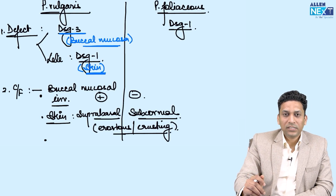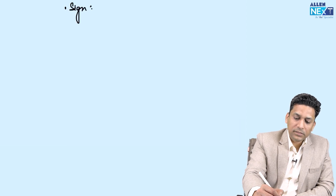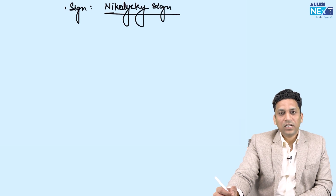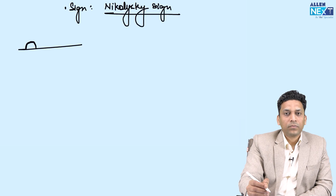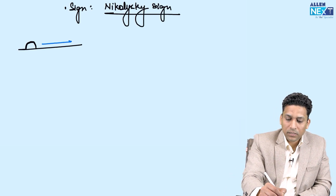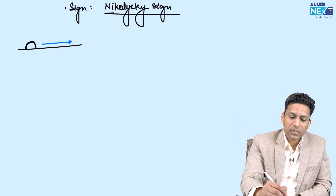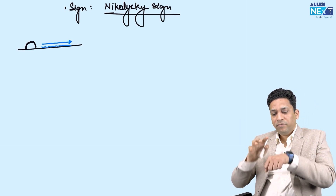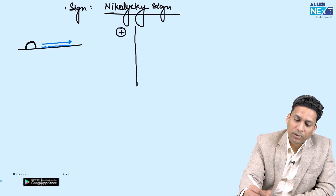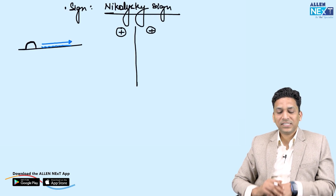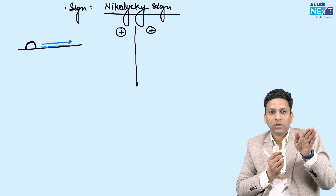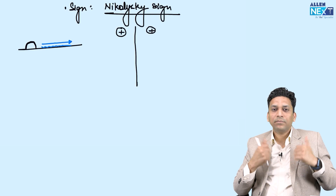One very important sign to elicit clinically is Nikolsky sign, which is seen in both types. When tangential pressure — pressure parallel to the skin — is applied over an adjacent area of the blister, the overlying epidermis separates. This is a positive Nikolsky sign. It is positive in both vulgaris and foliaceus because desmoglein are defective in both, making adhesions weak so that small pressure causes separation of keratinocytes.